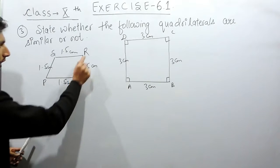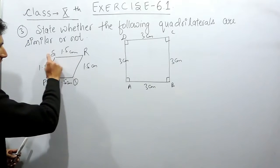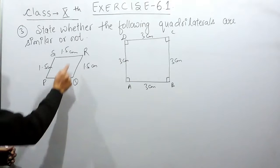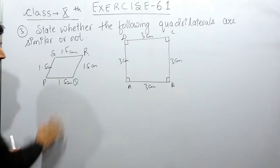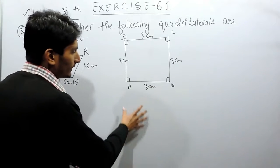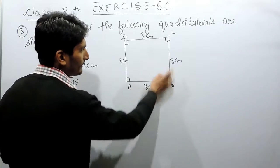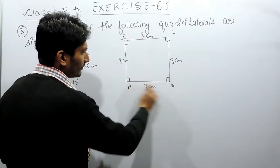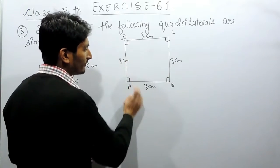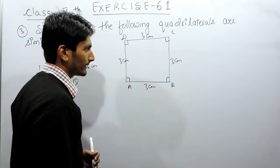The first is quadrilateral PQRS, where all sides are equal — this means this is a rhombus. And the second is quadrilateral ABCD, where all sides are equal and all angles are 90 degrees, which means this is a square.